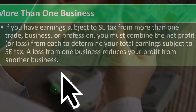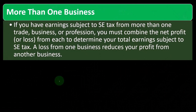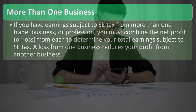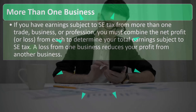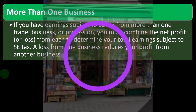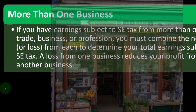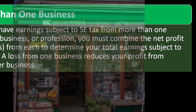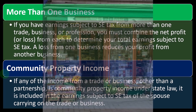If you have earnings subject to self-employment tax from more than one trade, business, or profession, you must combine the net profit or loss from each to determine your total earnings subject to SE tax. For example, if you have multiple Schedule Cs, you combine the net bottom-line figures from each, and then calculate self-employment tax based on the total. A loss from one business reduces your profit from another — so if one business made $100,000 and another lost $25,000, the net $75,000 would be subject to self-employment tax.